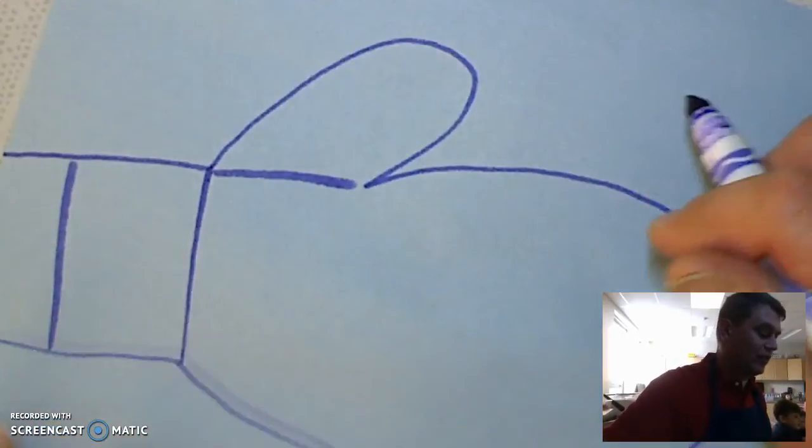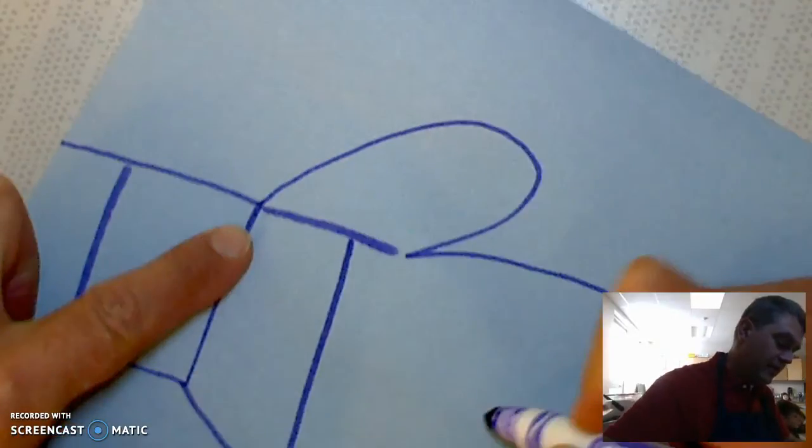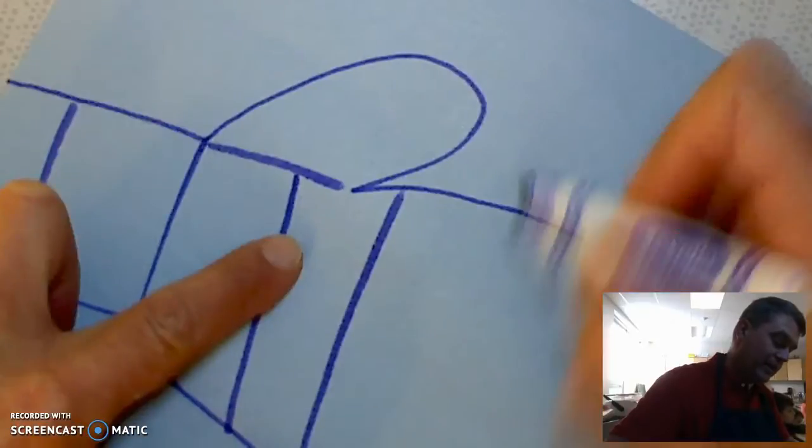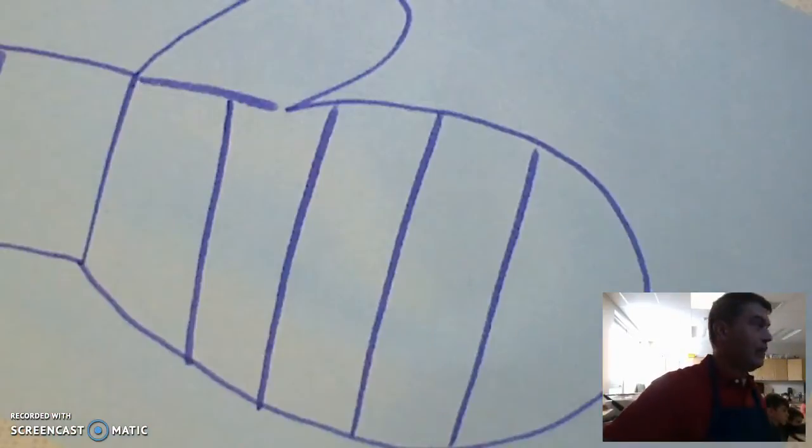We're going to have six lines total, so there's one, two, then I'm going to make one in the middle of my thumb, then I'm going to make one just in front of my thumb, and then I'm going to make two more, one, two.